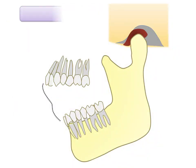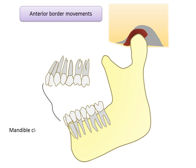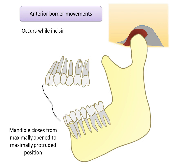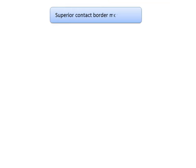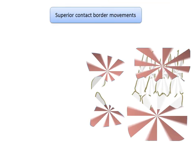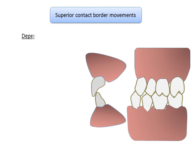This is followed by anterior opening body movements. If the condyle is stabilized in this anterior position, a hinge movement can occur when the mandible closes from maximally open to maximum protruded position. This protrusive movement occurs while incising and grasping food, after the condyles rotate for more than 13 degrees in the temporomandibular joint.